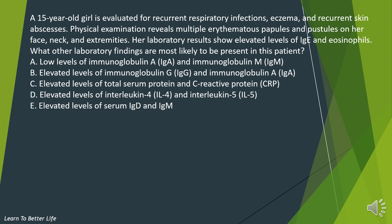A 15-year-old girl is evaluated for recurrent respiratory infections, eczema, and recurrent skin abscesses. Physical examination reveals multiple erythematous papules and pustules on her face, neck, and extremities. Her laboratory results show elevated levels of IgE and eosinophils. What other laboratory findings are most likely to be present? A. Low levels of IgA and IgM. B. Elevated levels of IgG and IgA. C. Elevated levels of total serum protein and C-reactive protein. D. Elevated levels of interleukin-4 and interleukin-5. E. Elevated levels of serum IgD and IgM.